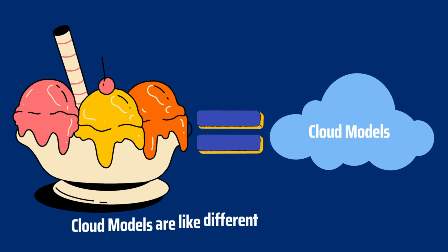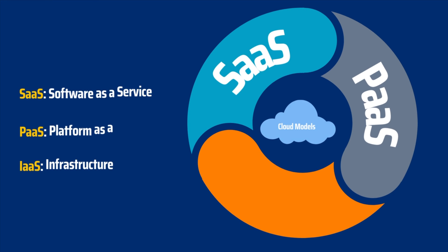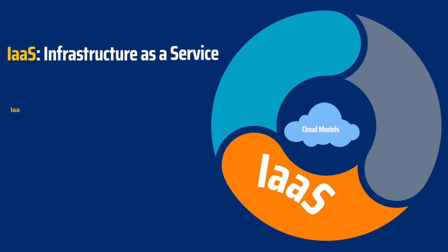Now let's define the cloud models. Cloud models are like different flavors of ice cream — just like you have different options to choose from, cloud models offer different ways to use and interact with the cloud. We are going to break these down into three different models: Software as a Service, Platform as a Service, and Infrastructure as a Service.